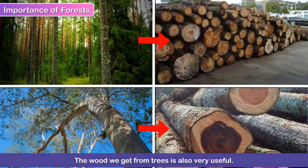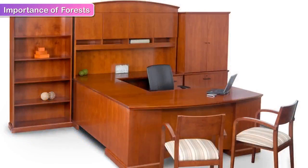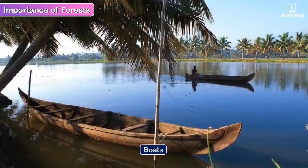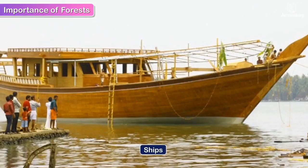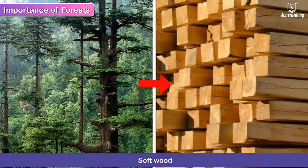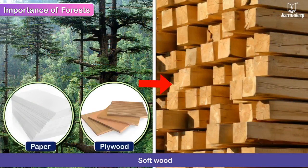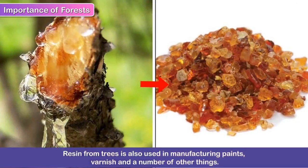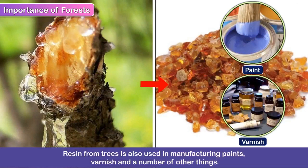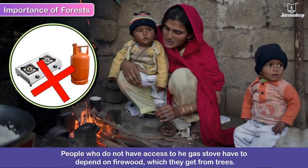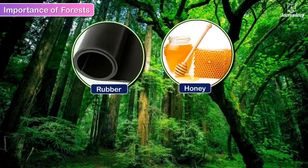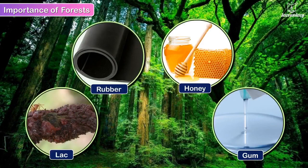The wood we get from trees is also very useful. We use it for making furniture, doors and windows of houses, boats, ships, and as firewood. Soft wood is used for making paper, plywood, pencils and bat sticks. Resin from trees is also used in manufacturing paints, varnish and a number of other things. People who do not have access to gas have to depend on firewood which they get from trees. Rubber, honey, lac and gum are also some valuable forest produce.